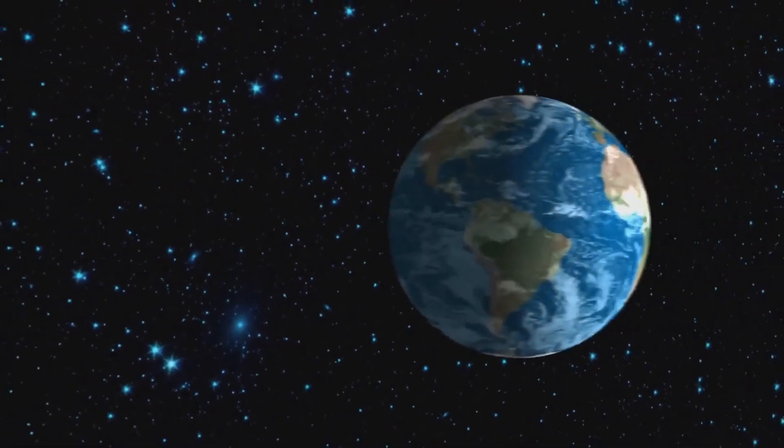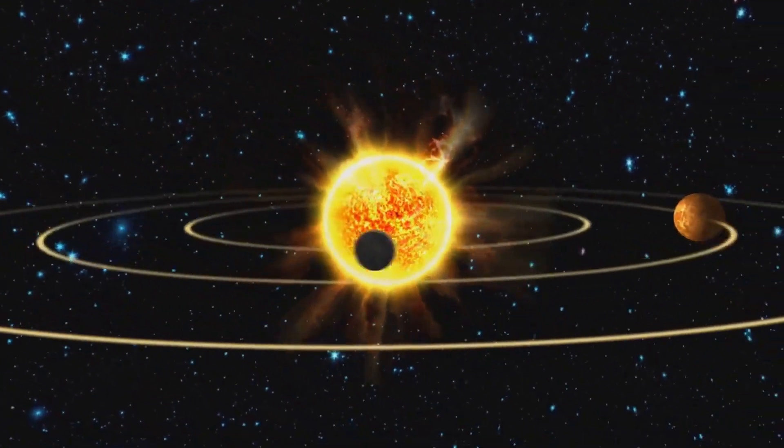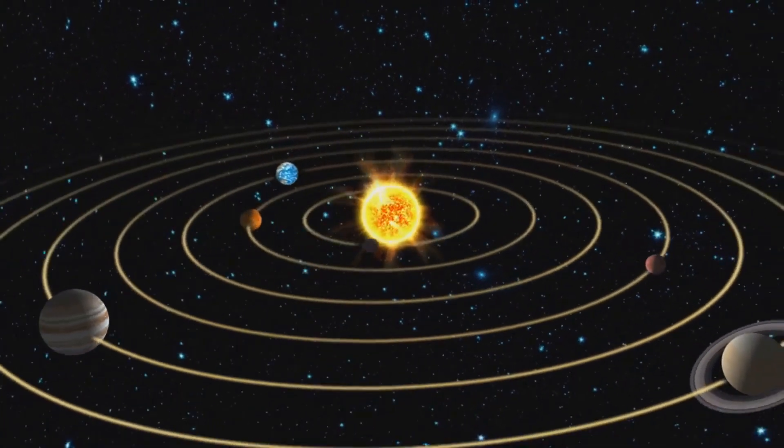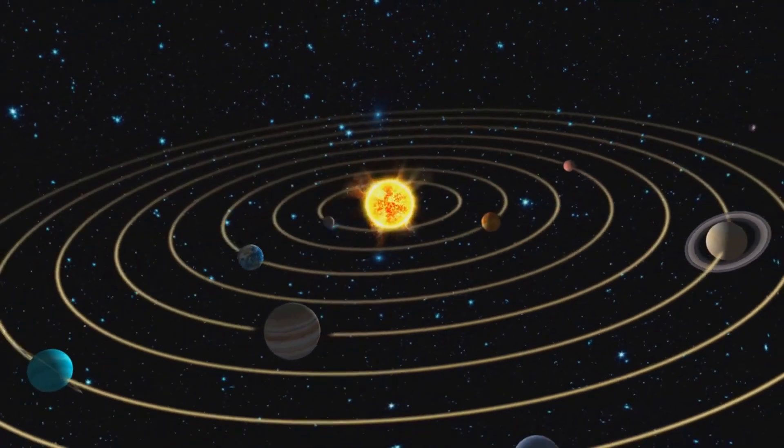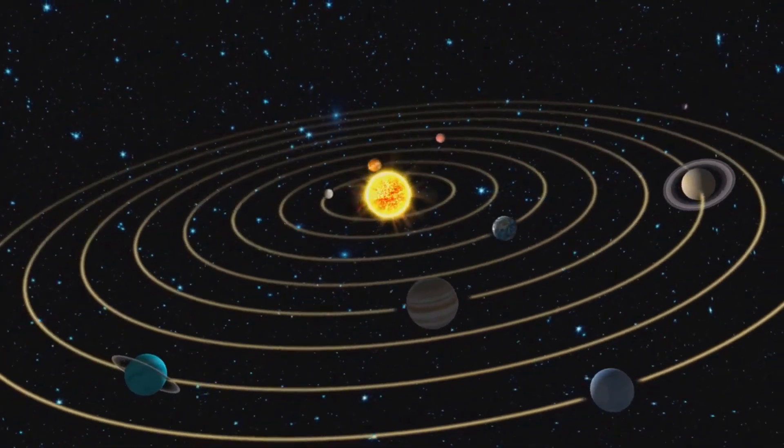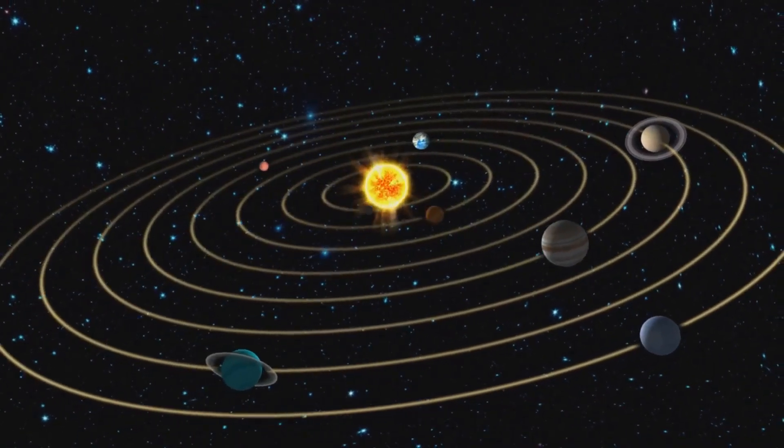Each planet, including our Earth, is not only rotating around the sun, but also moving with it through space. This results in a spiral pattern of movement for each planet, a cosmic dance choreographed by the sun's journey through the galaxy.